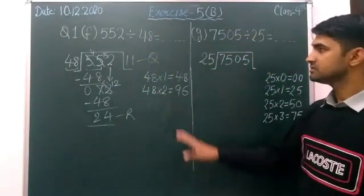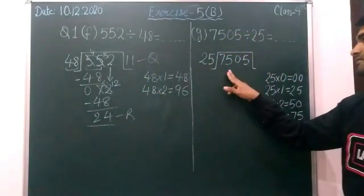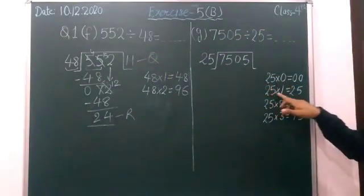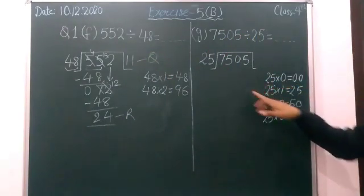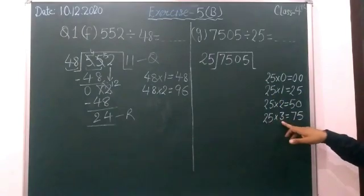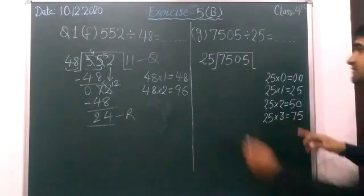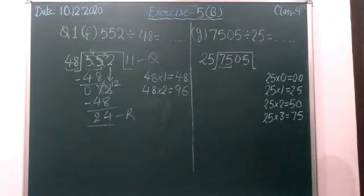Okay now next 25. 25 zeros are 0, 25 ones are 25 and we have to go. 25 threes are 75, 25 threes are 75.